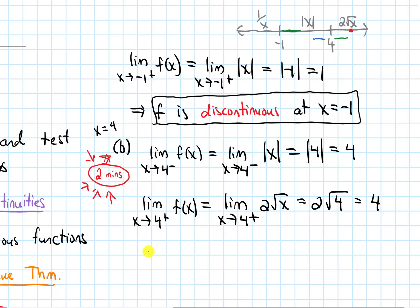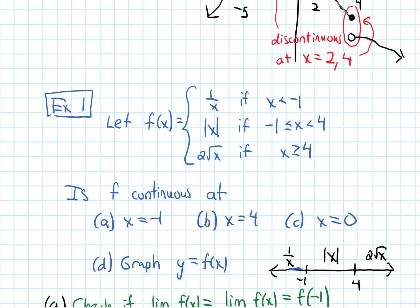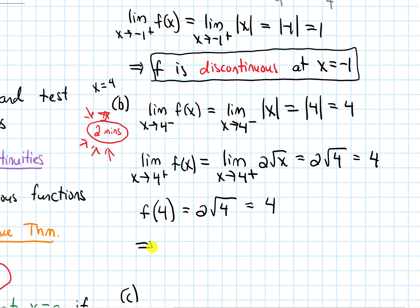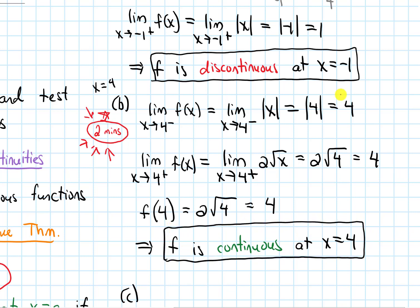Since the one-sided limits agree, I need to check the third condition: do these equal f of 4? Looking back at the piecewise function, to plug 4 in I use the bottom piece where x actually equals 4. So f of 4 equals 2 root 4, which equals 4. Therefore, our function f is continuous at x equals 4, because all three quantities are the same — the limit exists, equals 4, and that limit equals the y value of the function at x equals 4.